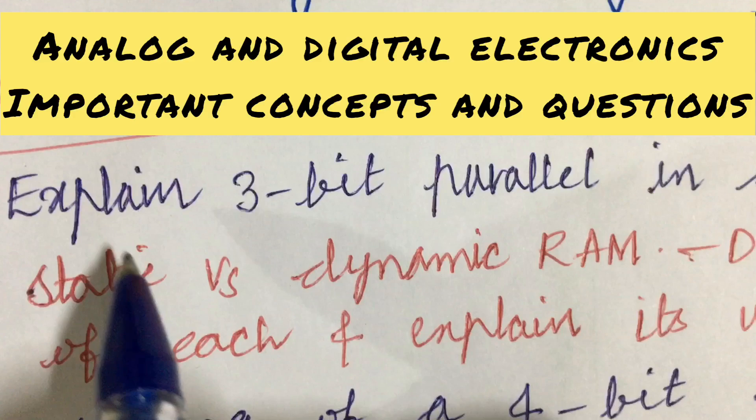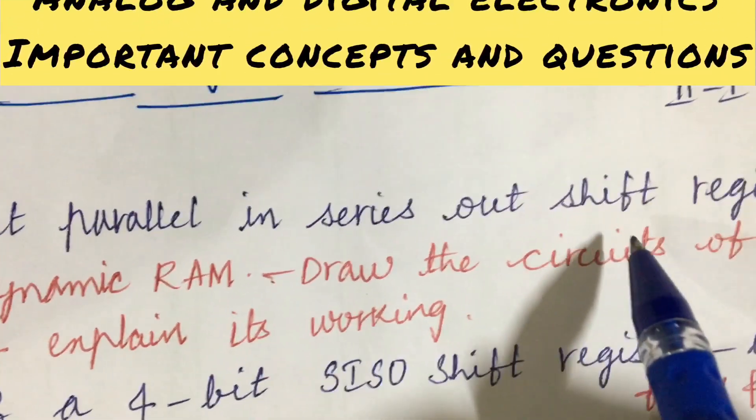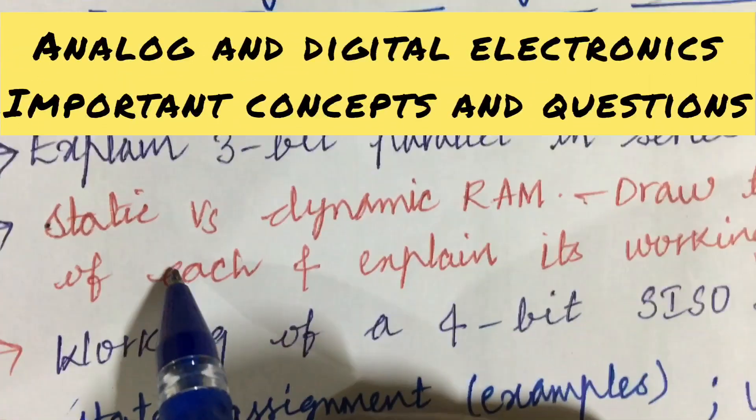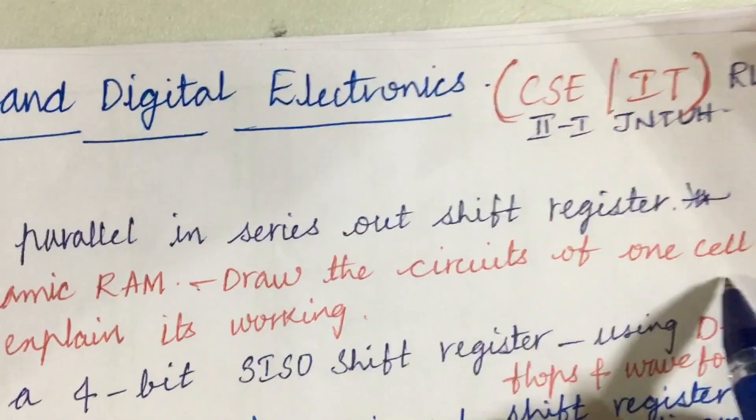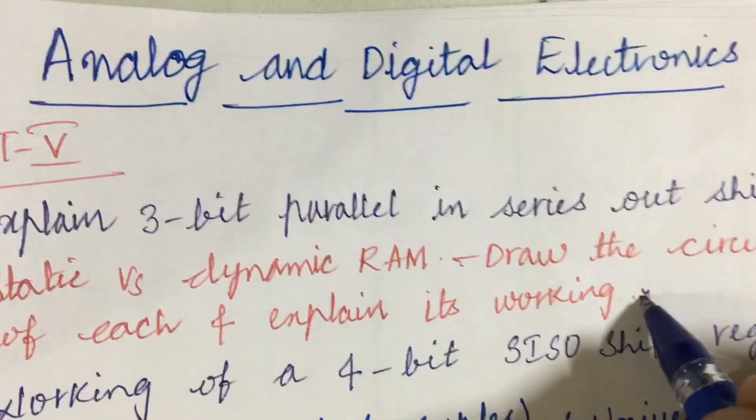The eighth question in the question paper is about explaining a 3-bit parallel-in serial-out shift register, which is a very important question. Also, the differences between static versus dynamic RAM and draw the circuit diagram of one cell of each and explain its working is also asked several times.